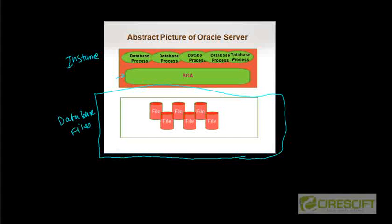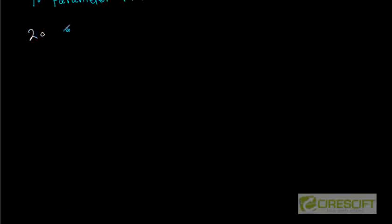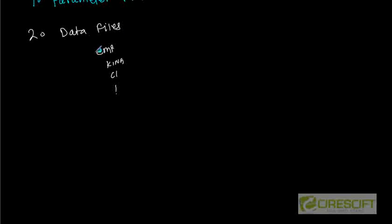The second file type is data files, and this is where all of your data will ultimately be stored. That means whenever we are creating a table called EMP and inserting ten rows — employee name king, clerk, and so on — that information is stored in an operating system file called a data file. Every database must have at least one data file, and this is one of the most important files because it contains all our information.